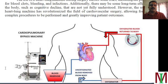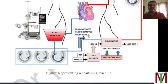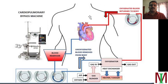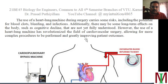Schematically, the heart-lung machine takes the blood stream, pumps it, oxygenates it, performs heat exchange — including cooling and heating — and then pumps it back to the body stream while the heart operation is being performed. Additionally, there may be some long-term effects on the body like cognitive decline, which is not yet fully understood by health experts. However, the use of the heart-lung machine has revolutionized the field of cardiovascular surgery, allowing for more complex procedures to be performed and greatly improving patient outcomes.